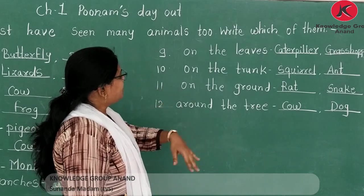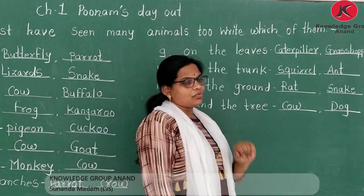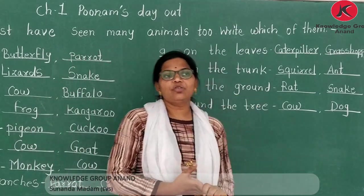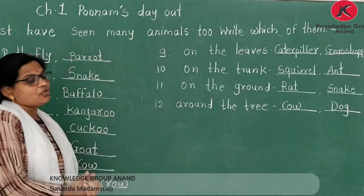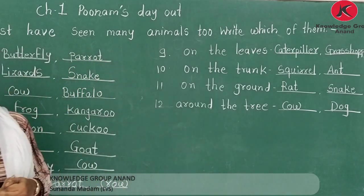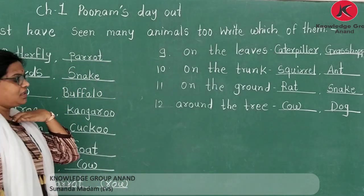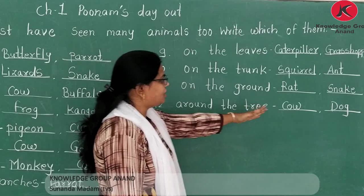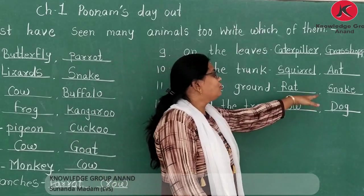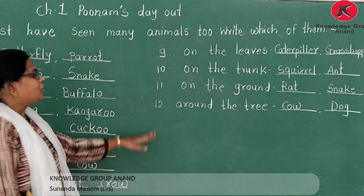Eleven number is 'on the ground.' Ground pe jo rehte hain — grounds pe to bohut saare animals rehte hain: snake, and others. I have mentioned only a few here; other animals you can mention on your own.